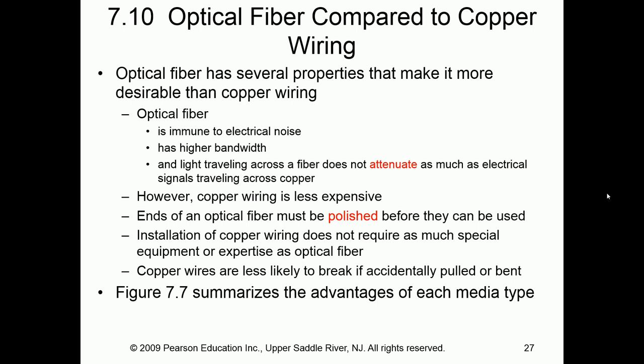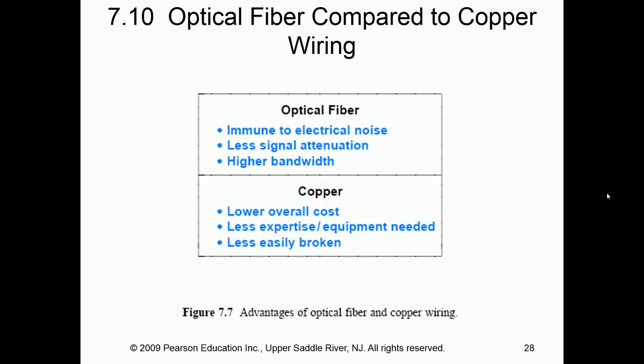Some pros for fiber: it's immune to electrical noise because it's light, not copper-based, so electrical noise is not an issue. It can have higher bandwidth and can go further. However, one of the biggest issues is cost. Optical is immune to electrical noise, has less degradation, and typically higher bandwidth — though costs are higher. Copper is cheaper, normally requires less expertise, and is less fragile.